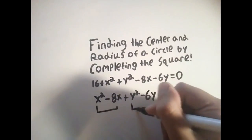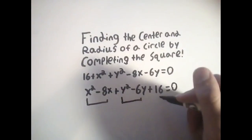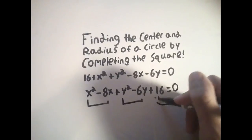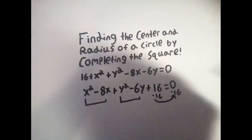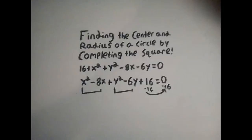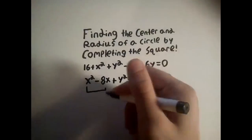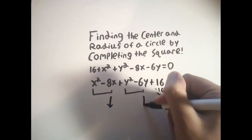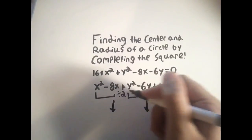The first step to completing the square is moving all like variables together, and then moving over any constants, so we only have x's and y's on one side of the equation. Next up, we're going to want to find any first-degree variables with coefficients, and then divide them in half, or by two.